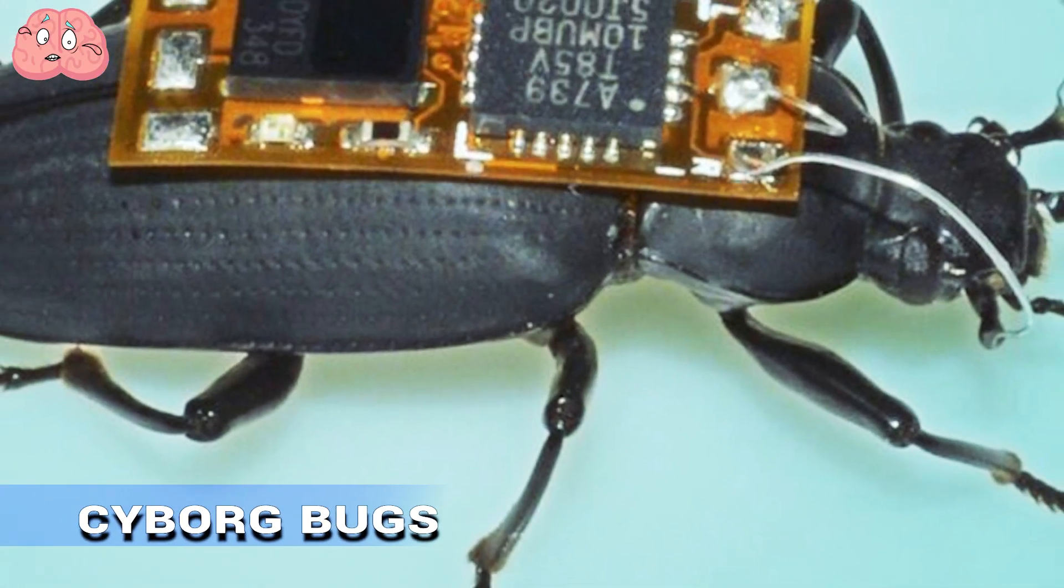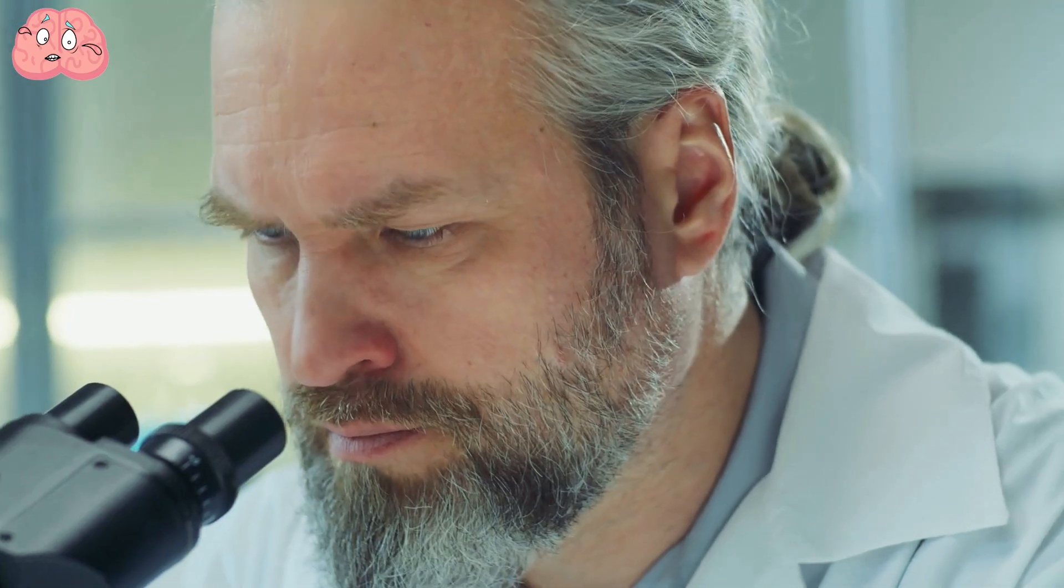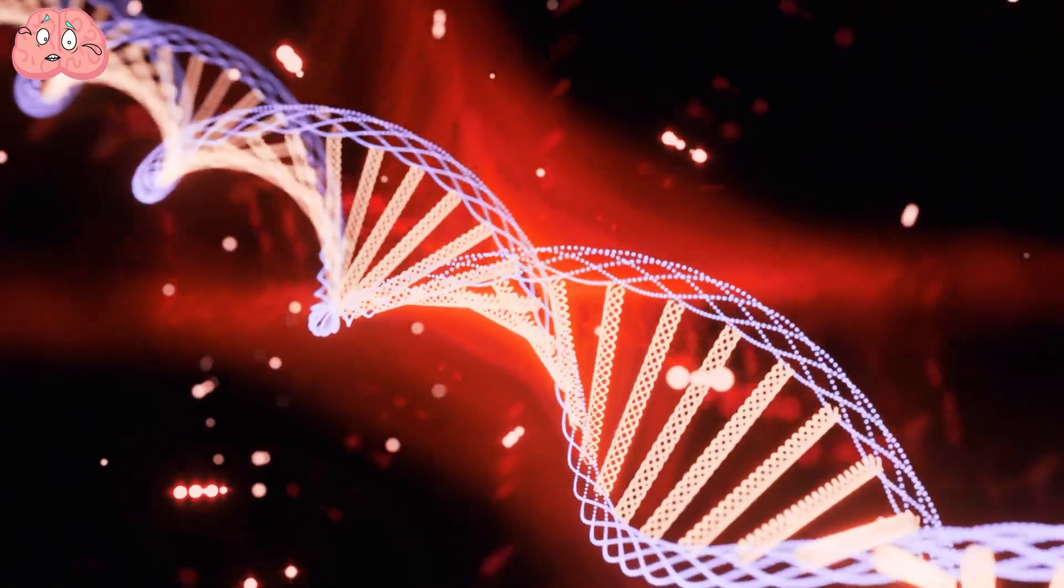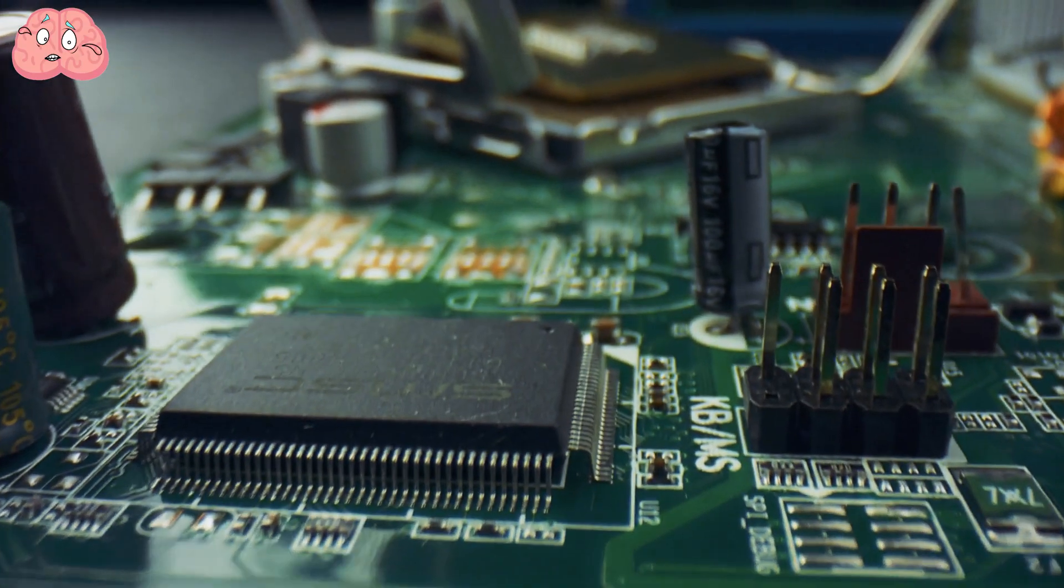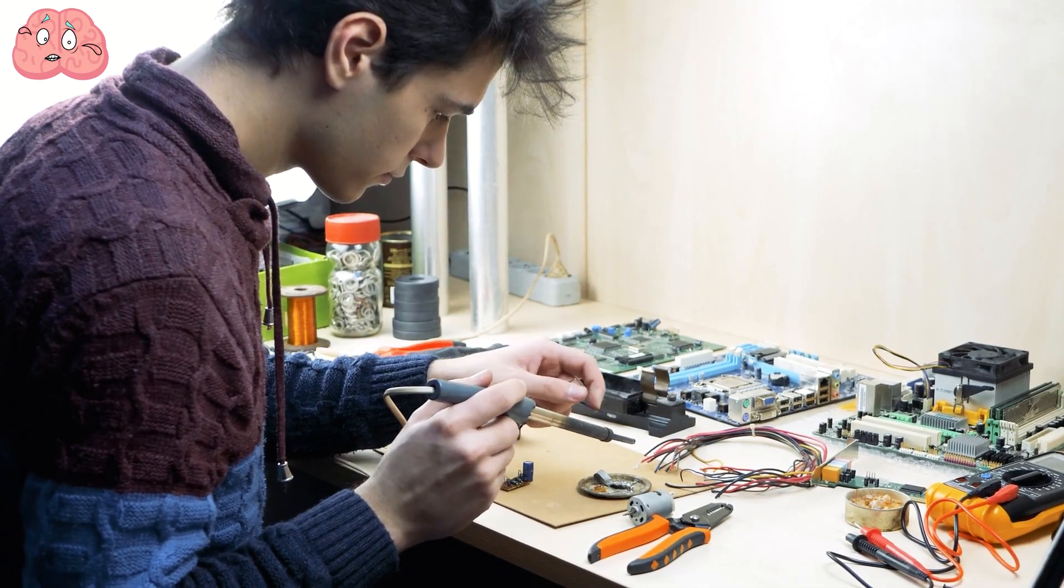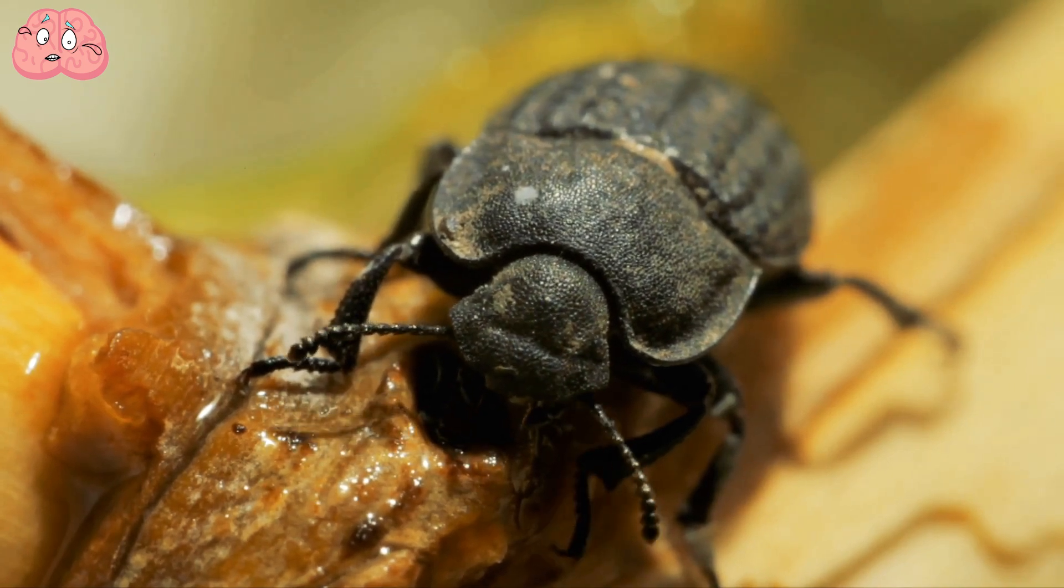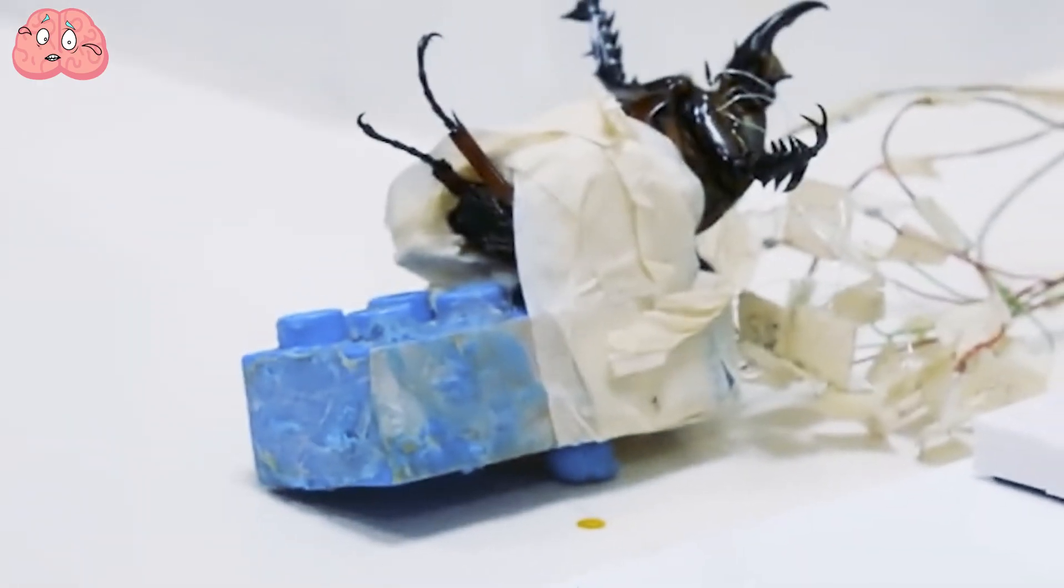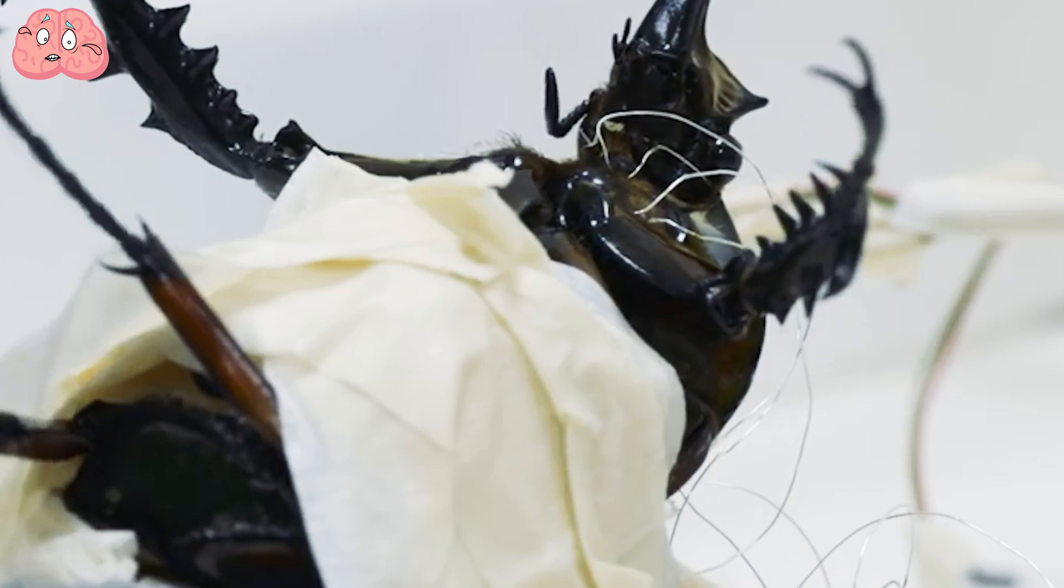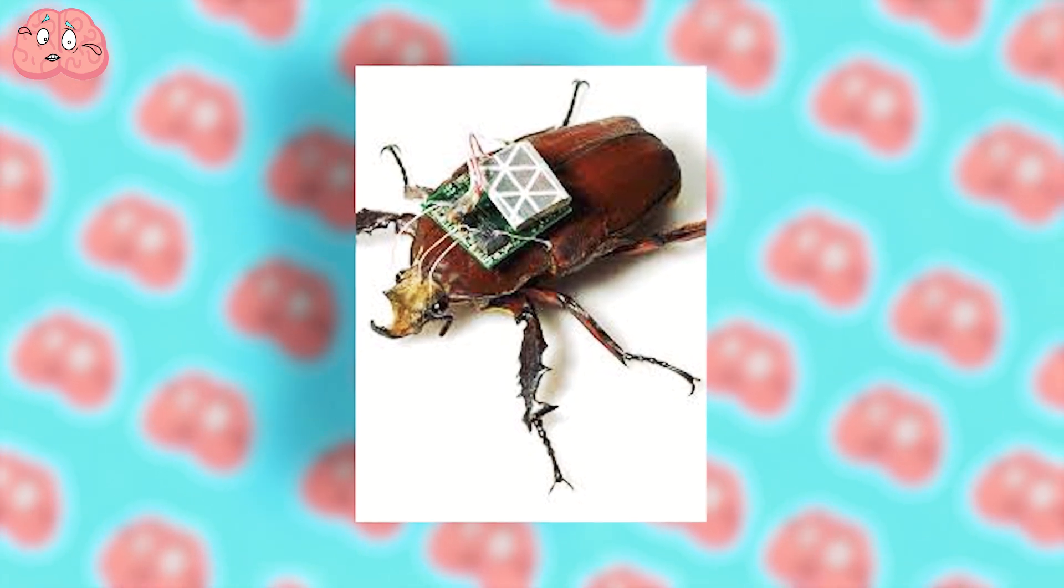Cyborg bugs: Sometimes creating unusual creatures does not require crossing different animal species or altering genes. Electronic technology alone can suffice. Engineers at UC Berkeley have developed a device that enables them to control the movements of beetles. They have attached a 3.9-volt battery to the beetle's back, connected to six electrodes implanted in the muscles responsible for wing movement.